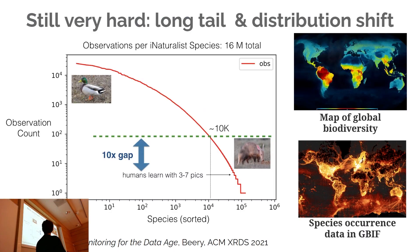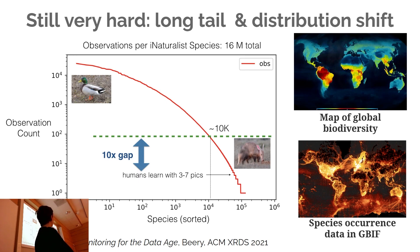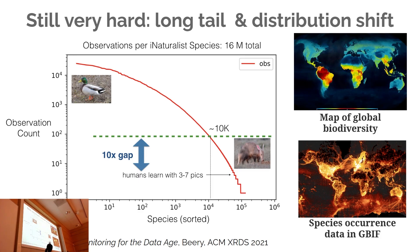These are the things AI cannot do right now. We are very bad at the long tail and very bad at distribution shift. For the long tail: on iNaturalist, if you plot the number of examples per species on a log-log scale, what we can reasonably do well requires something like a thousand examples — that number may be creeping down towards a hundred now — but they need to be diverse and representative examples of your species of interest.